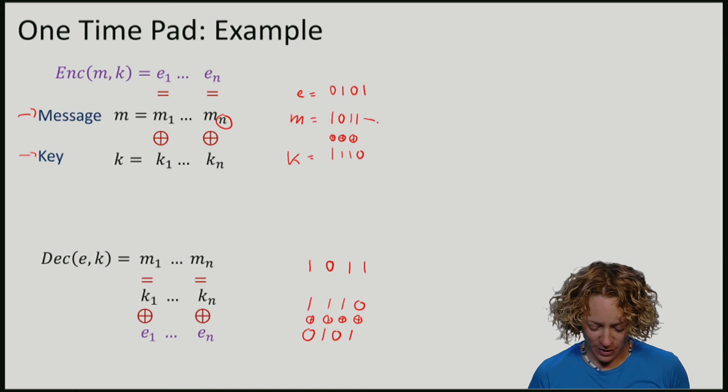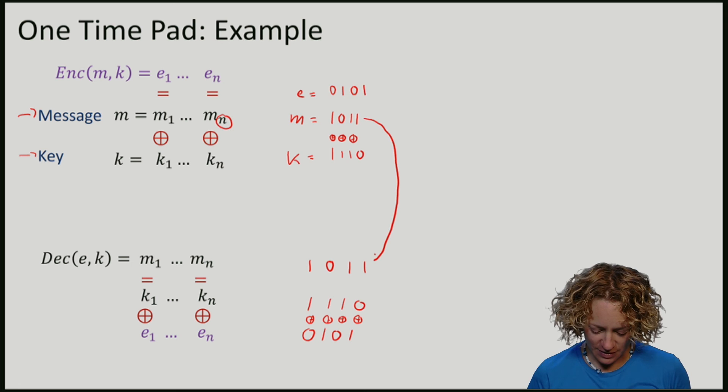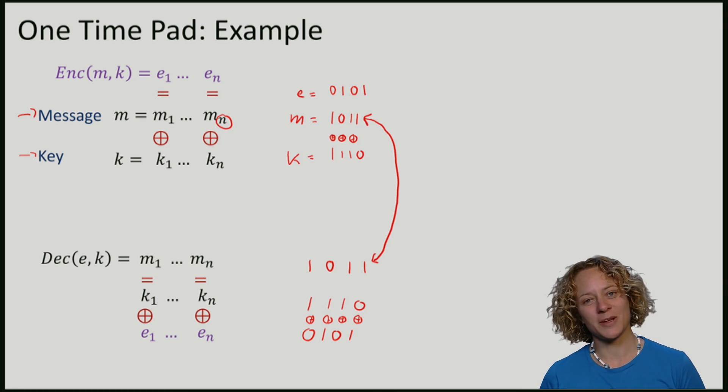So we see, we can compare the message that Alice wanted to send and the decrypted message that Bob has computed, and we see that they are the same.